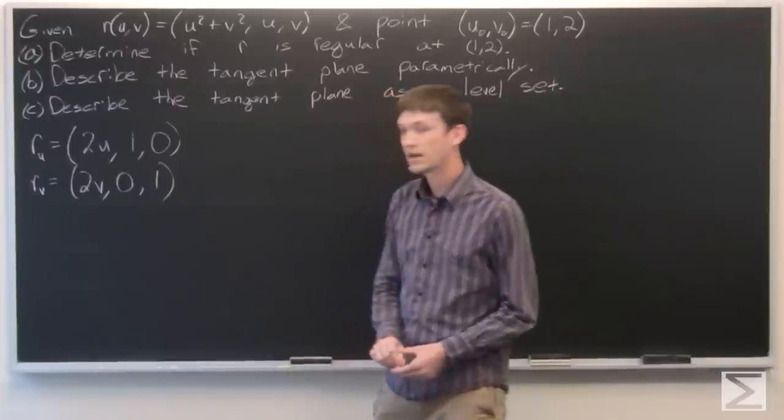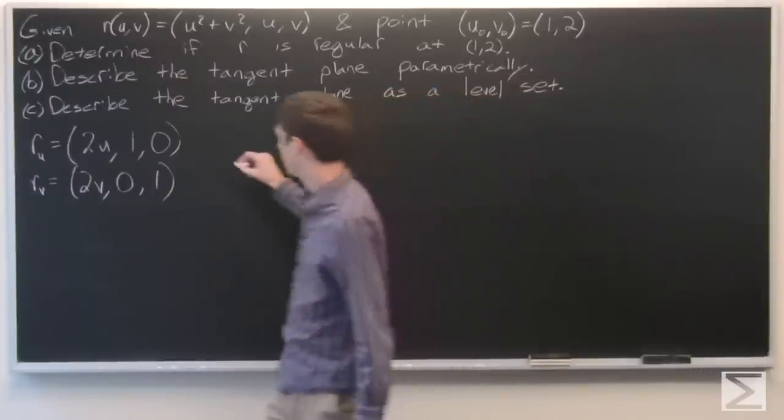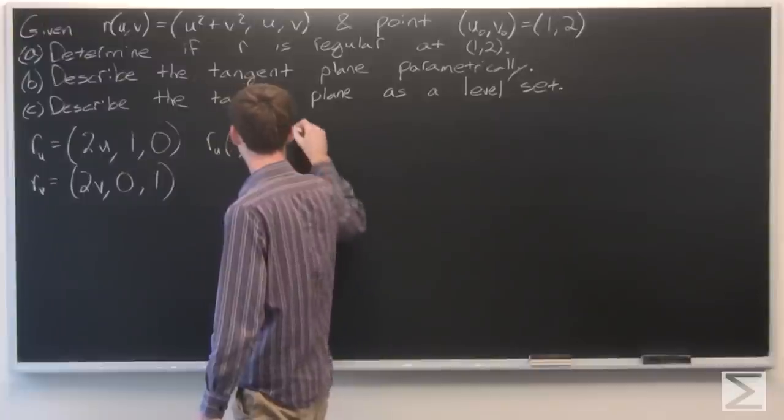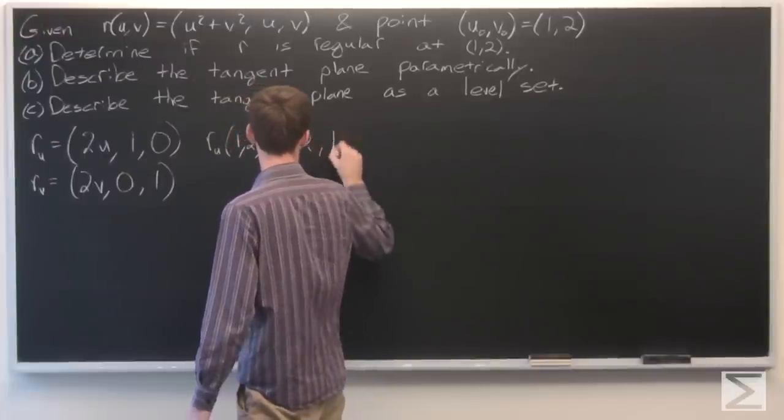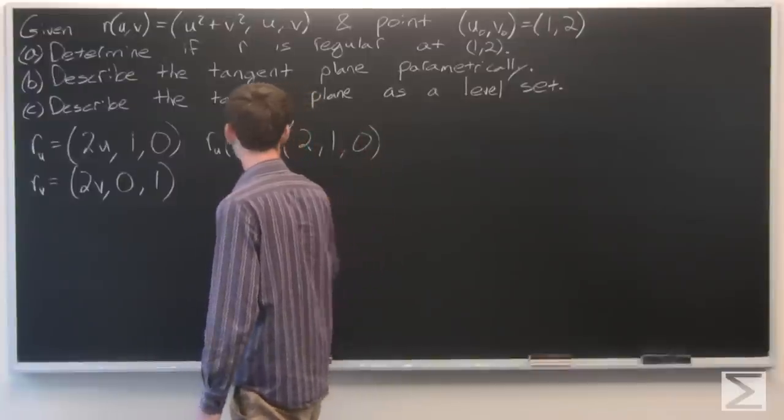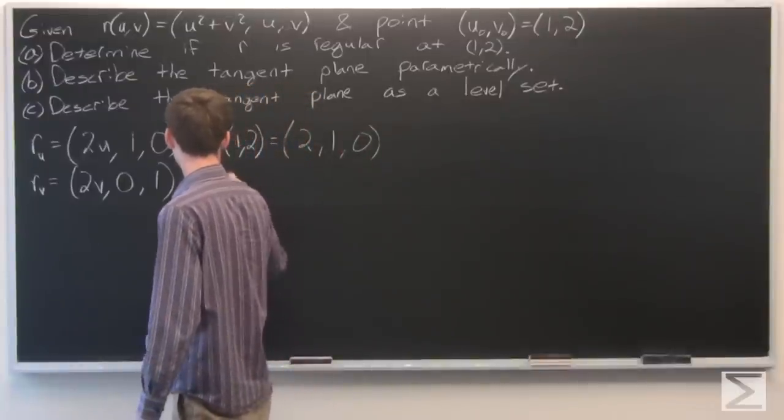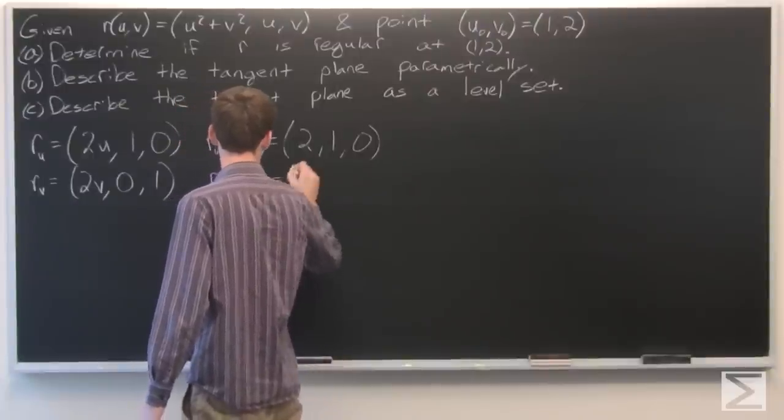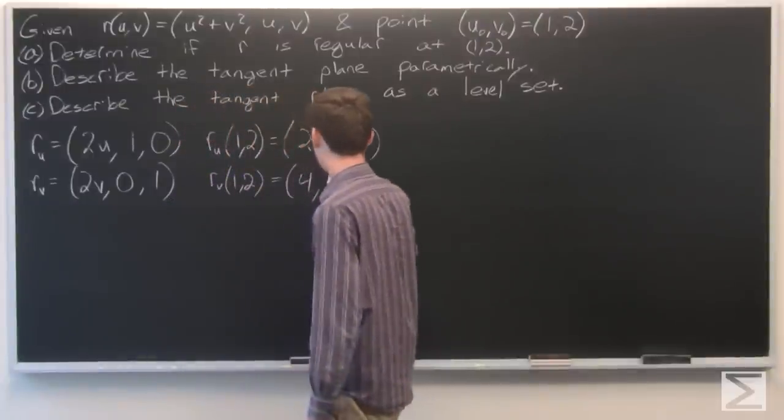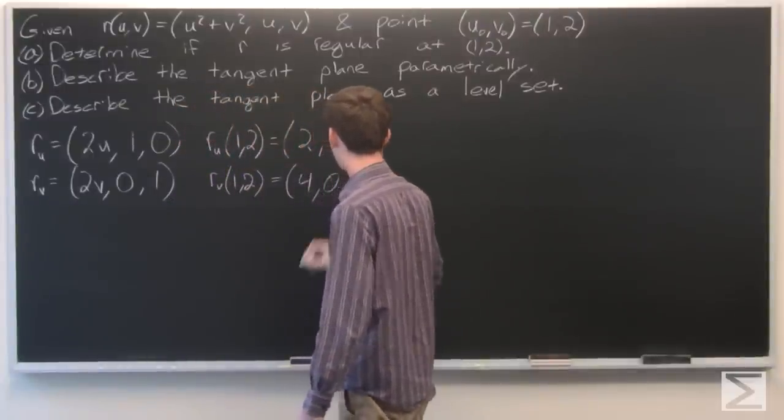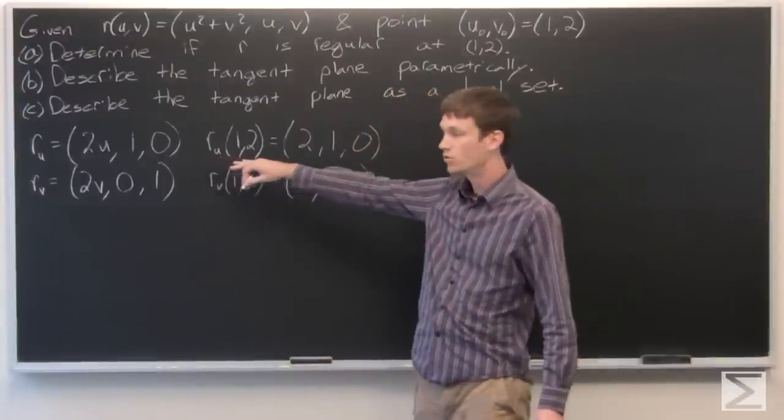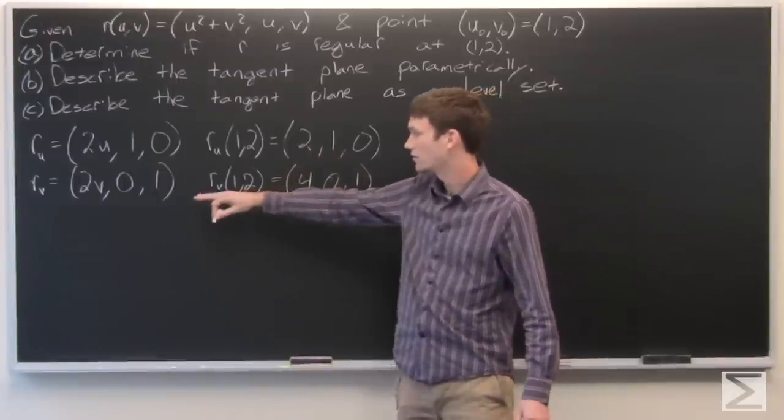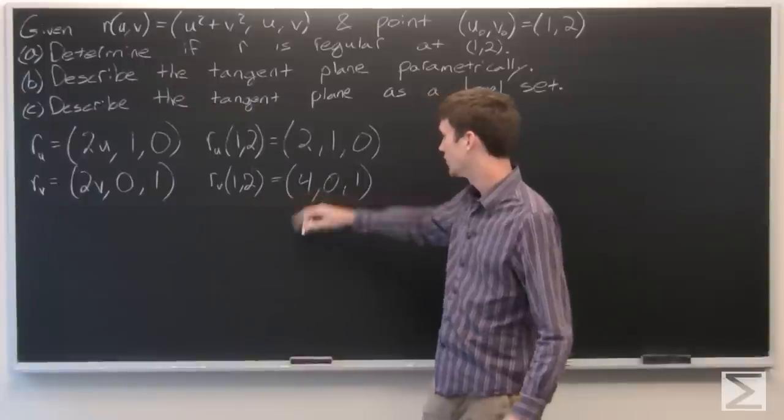And we'll take it at the point 1, 2. So we get that r sub u at 1, 2 is the vector 2, 1, 0. r sub v at 1, 2 is 4, 0, 1.